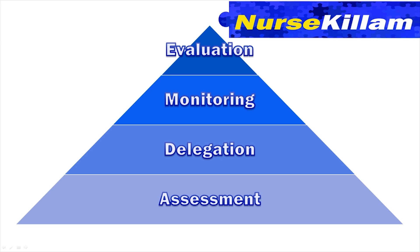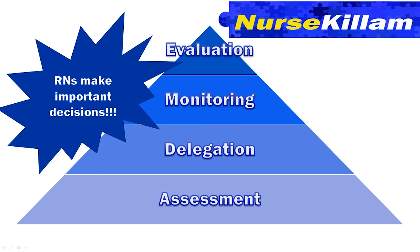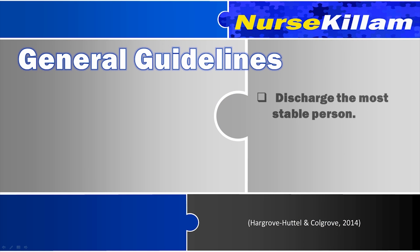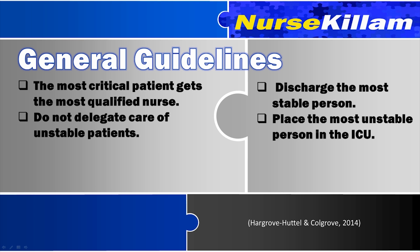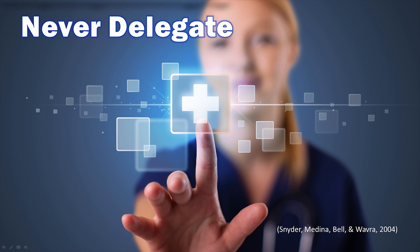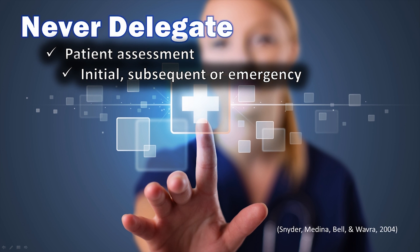As a registered nurse, you need to make decisions about patient assignments and transferring clients to another unit. As a general rule, assign the most critical patient to the most experienced and qualified nurse. Do not delegate care of unstable patients to UAPs or LPNs. If you need to make a decision about who to discharge, pick the most stable person. Keep the most unstable patient in the intensive care unit, or transfer them there as needed. Never delegate an initial patient assessment or subsequent assessments. LPNs can do routine physical assessments, but RNs must complete assessments once in each 24-hour period. LPNs cannot assess patients in emergency situations.